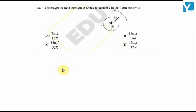The magnetic field strength at O due to current I in the figure below is: In this given figure, we need to know the magnetic field at O due to this three-fourths of the circle and an arc making an angle of 3π/2 at the center, plus this quarter circle.